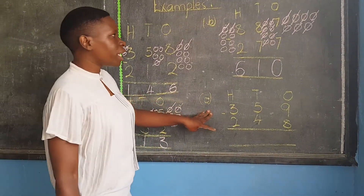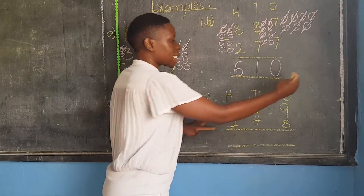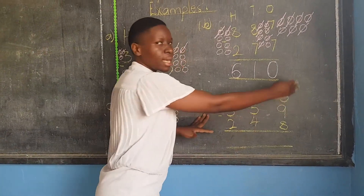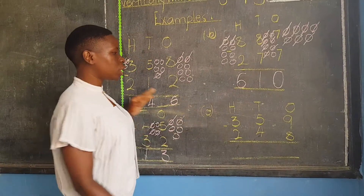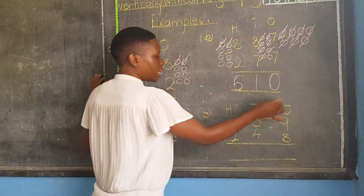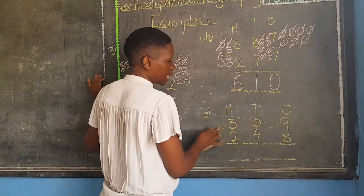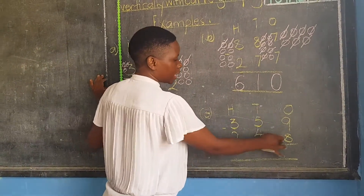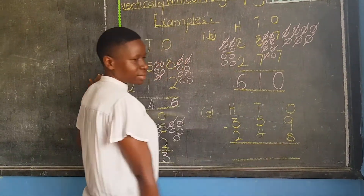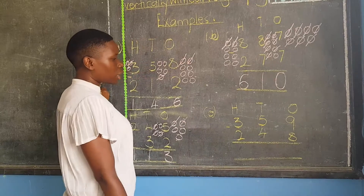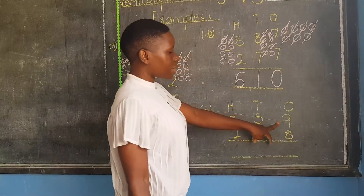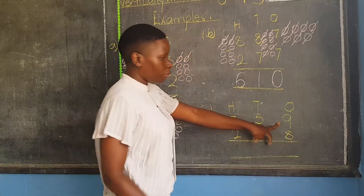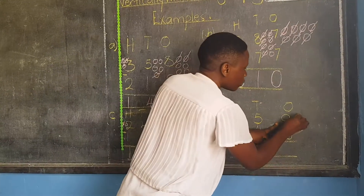Then we move on to our last part. Remember to begin from your right-hand side, coming to the left. So we shall say nine, take away eight. In subtraction, you start with the first number. So here we count.